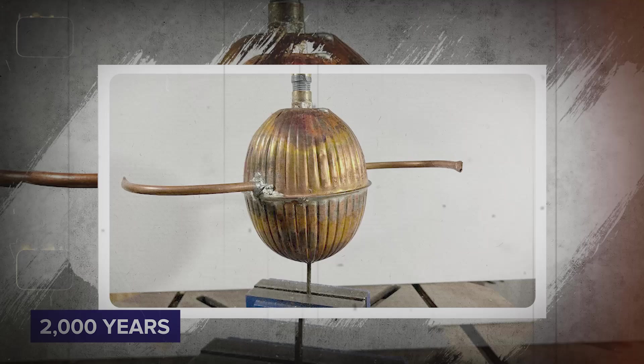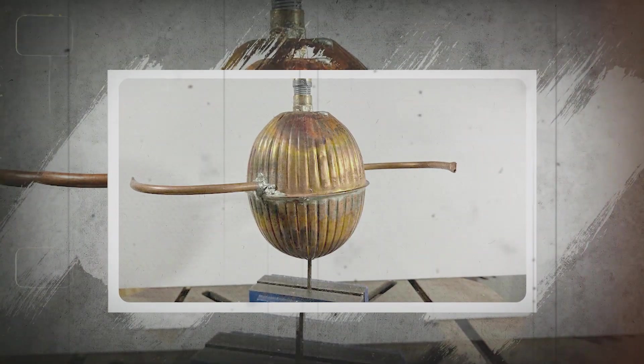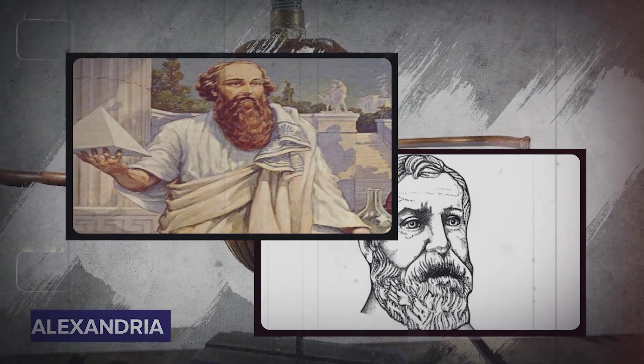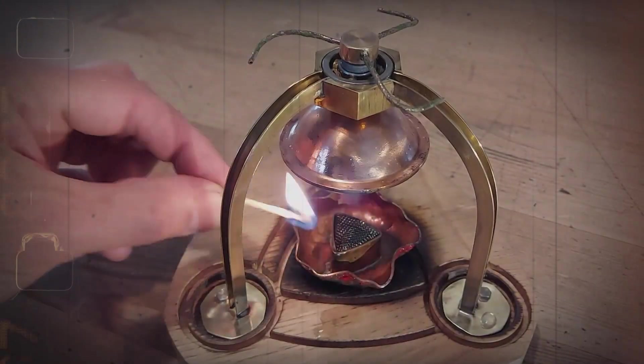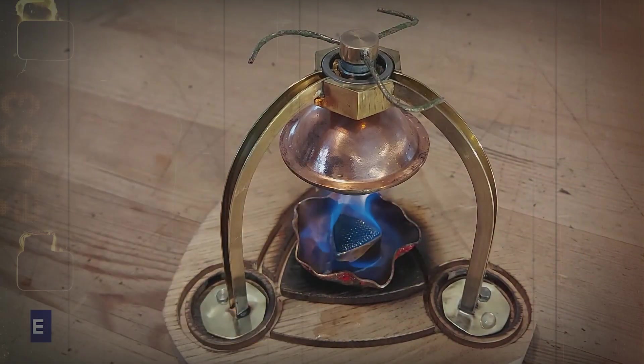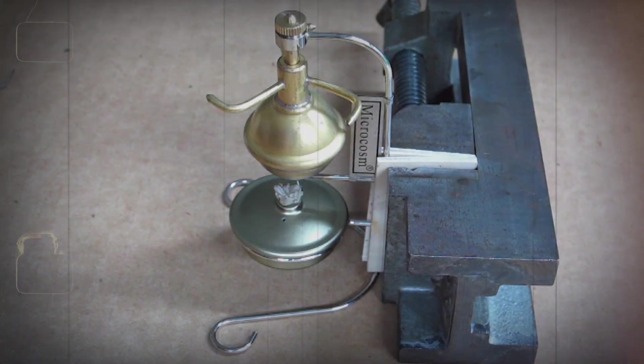Almost 2000 years before the start of the Industrial Revolution, a Greek mathematician and engineer named Hero of Alexandria created a device demonstrating the effectiveness of steam. This invention was called the Aeolipile, or Hero's engine. It was a very basic steam powered device.